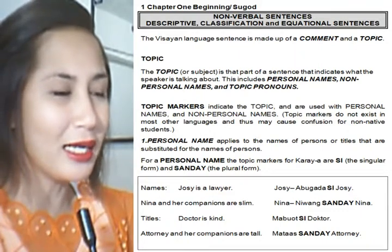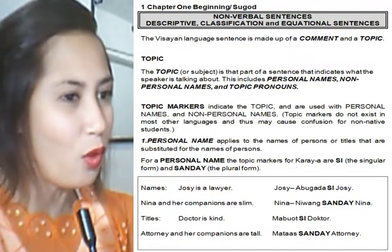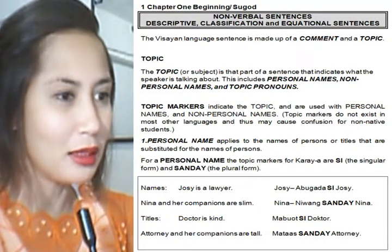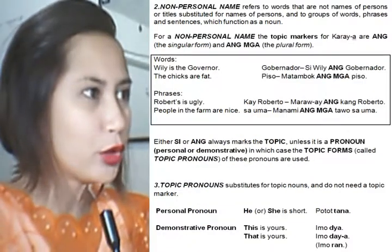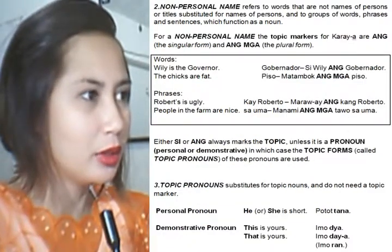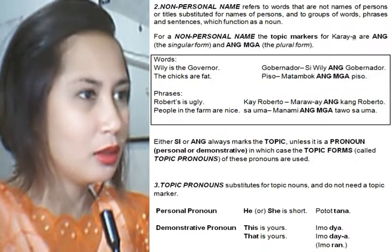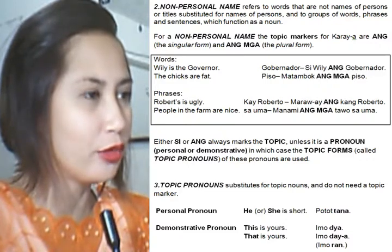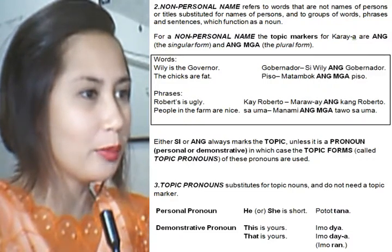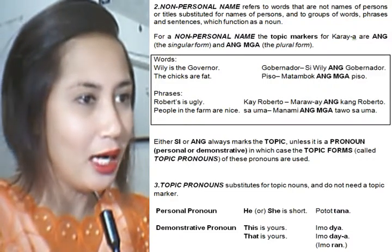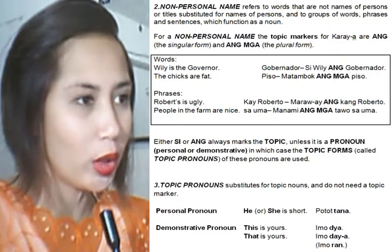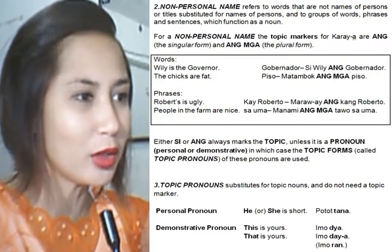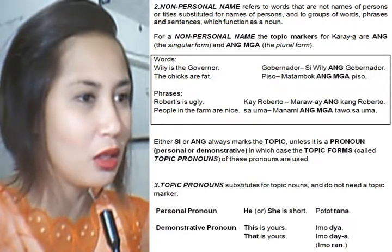2. Non-Personal Name. Examples: 'Abugada si Josie' (singular), 'Niwang sanday Nina,' 'Mabuot si Doktor Mataas,' 'sanday Attorney.' For a non-personal name, the topic markers for Kinaraya are 'ang,' the singular form, and 'ang mga,' the plural form. Examples: 'Si Willie ang gobernador.' 'Matambak ang mga pisa.' 'Maraway ang kang Roberto.' 'Manami ang mga tao sa uma.'